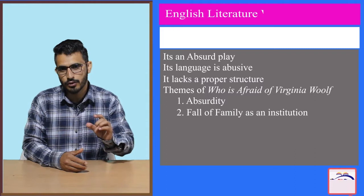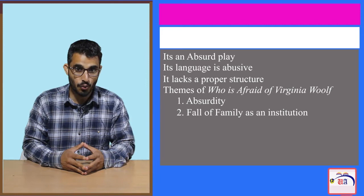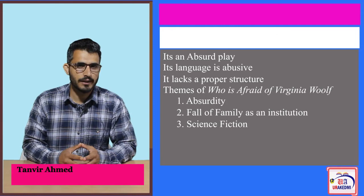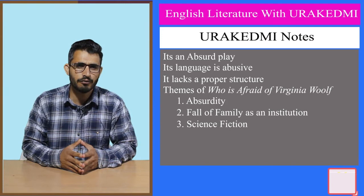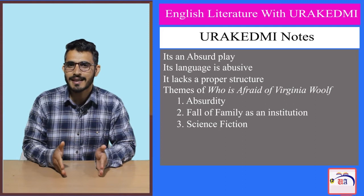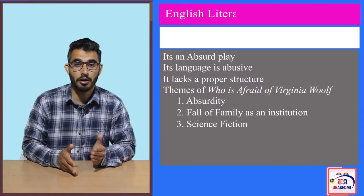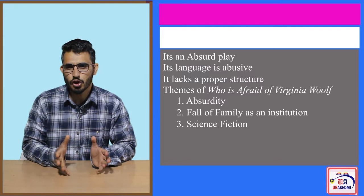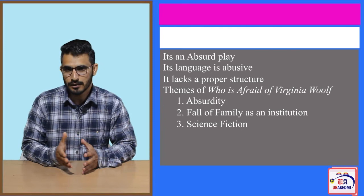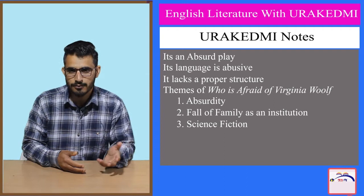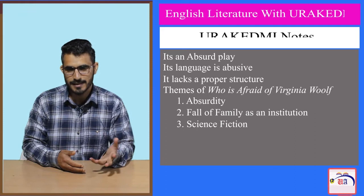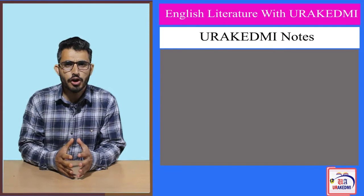This fall of family as an institution had happened in the postmodern era almost throughout the world, and it became an important theme of postmodern writings. Edward Albee's play Who is Afraid of Virginia Woolf also deals with it. Science fiction is another important theme of postmodern writing — there are many plays dealing exclusively with science fiction. In this play, it is not a science fiction play, but there is a commentary on science fiction. When George and Nick are in conversation — since Nick is a biologist and George is a history teacher — George says historical facts would never find place in literature, that the future belongs to science fiction, to genetic discoveries, and to science.